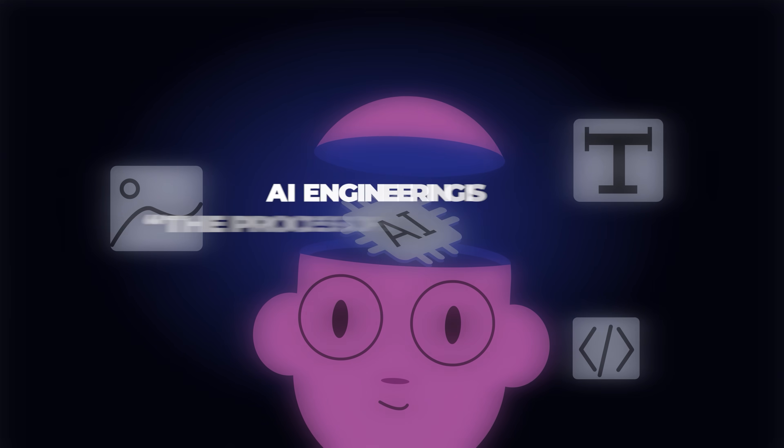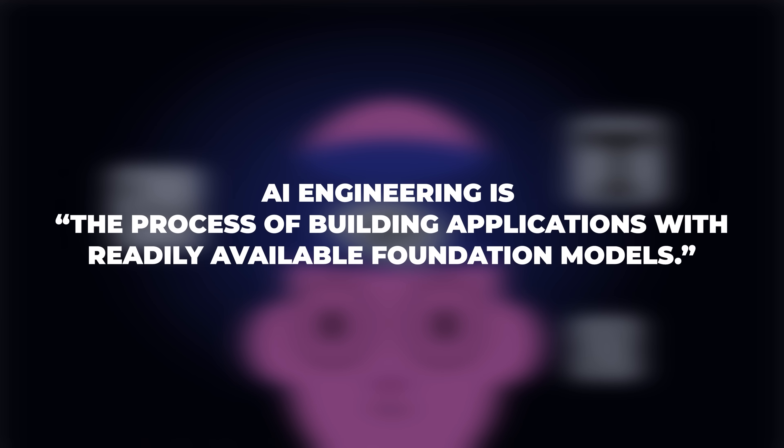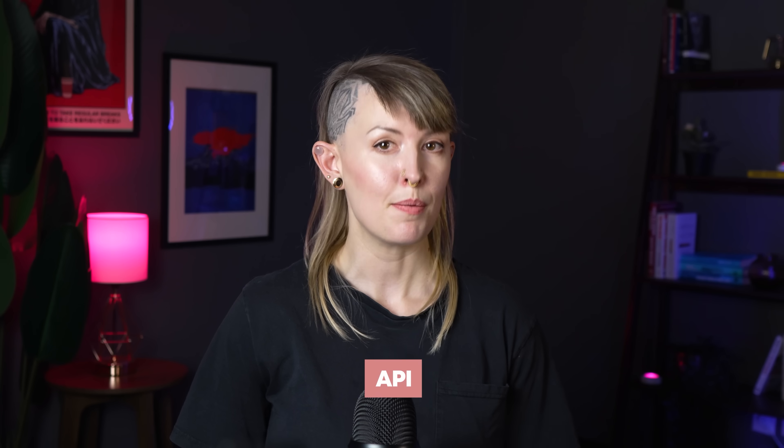So what is AI engineering? AI engineering is the process of building applications with readily available foundation models. In practice, AI engineers start from off-the-shelf models, often via an API, adapt them with prompting or one of the other techniques we'll talk about, and deploy them somewhere for people to use. They make sure the AI-powered application has proper evaluation, monitoring, security guardrails, cost controls, and good enough performance.